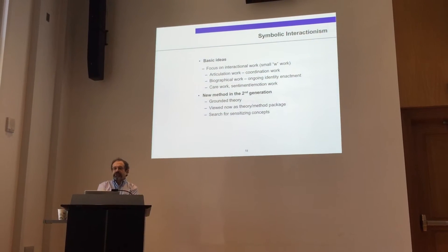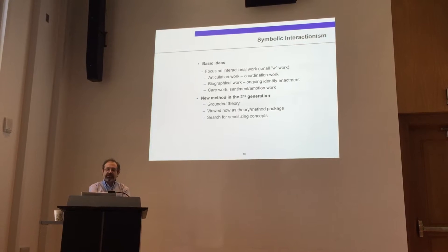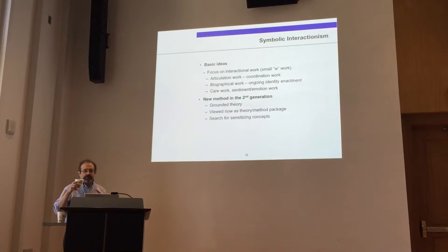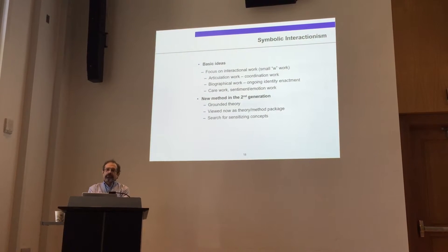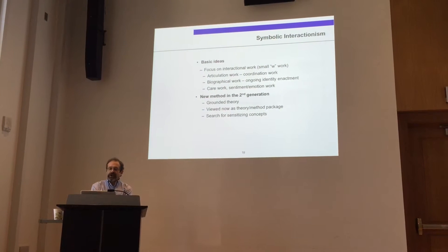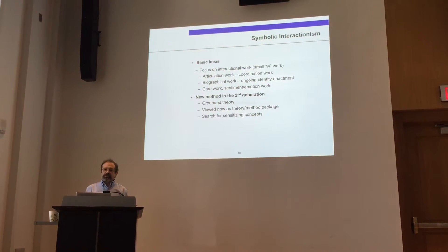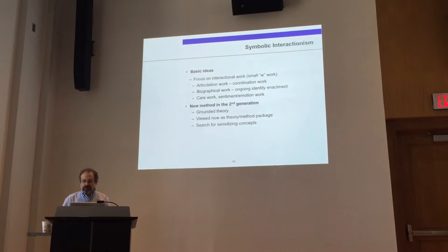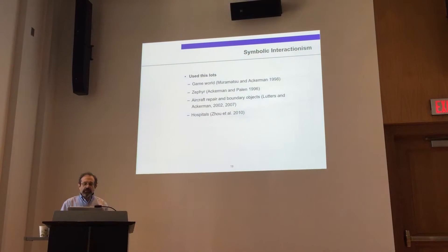There were some new methods in the second generation. There was something called grounded theory, which I think everybody in CSCW knows at this point. This was designed primarily to give some sort of structure to interpretivist work. It's now viewed as a theory-method package — some people believe grounded theory can only be used within symbolic interactionism. If you're invoking the word grounded theory, you should really understand a little bit about the method debates, which range between different camps between Glaser and Strauss.